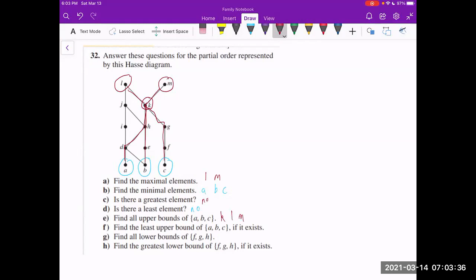Now what about a least upper bound, as part F is asking? So a least upper bound refers to an upper bound of A, B, and C that is going to be less than all of the other upper bounds. And in this case, we see that K is less than M, and K is less than L. So K is going to be our least upper bound.